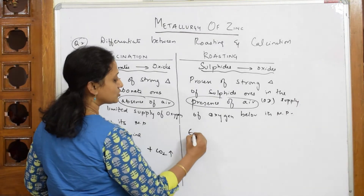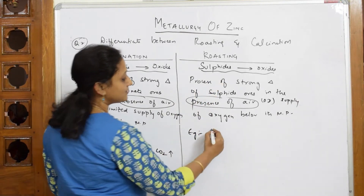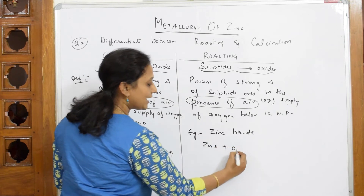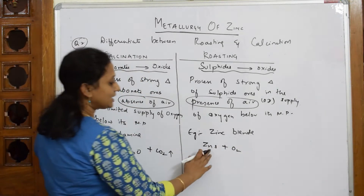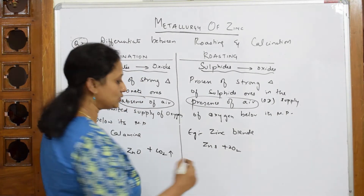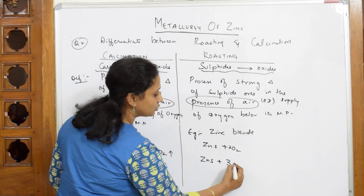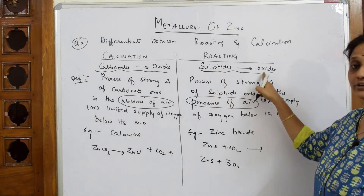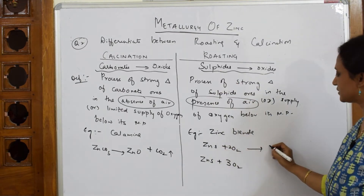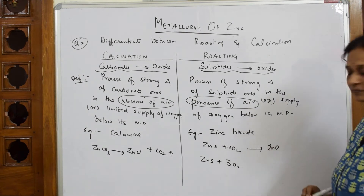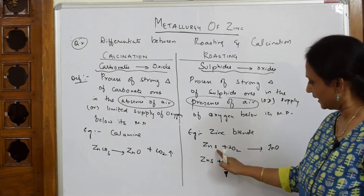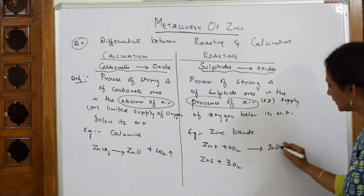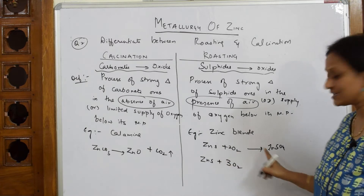Now for roasting, we take sulfide ores — zinc blende, which is zinc sulfide (ZnS). I am going to add oxygen. There are two conditions: I can roast ZnS with two moles of oxygen, or with three moles of oxygen. When you roast zinc sulfide with two moles of oxygen, sulfides are converted to oxides, so we get zinc oxide. But there is an exception here — with two moles you actually get zinc sulfide as a product. Remember that.